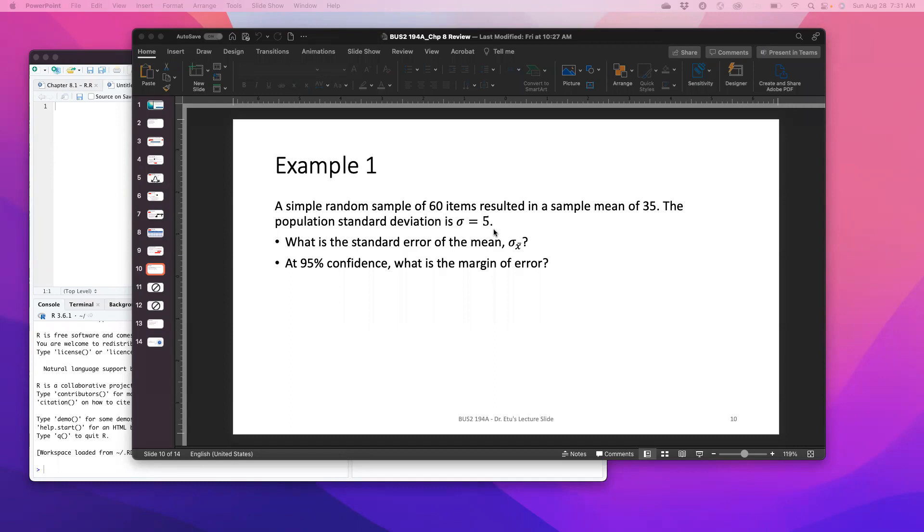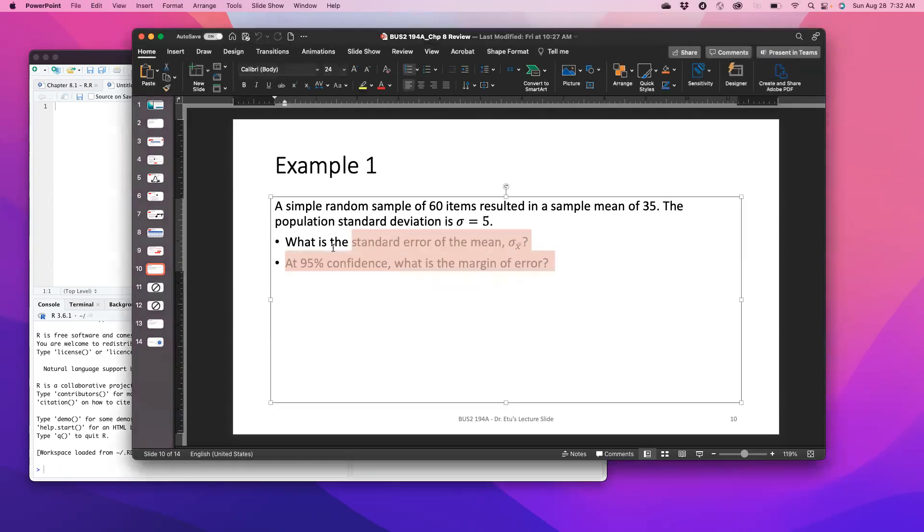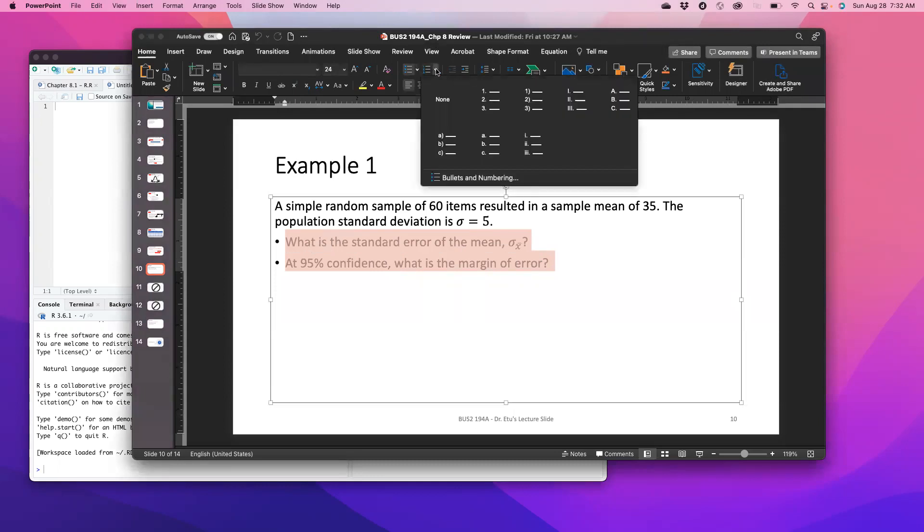So the question says, a simple random sample of 60 items resulted in a sample mean of 35. The population standard deviation sigma is 5. And then the first question there is, what is the standard error of the mean? And then we should find at 95% confidence, the margin of error.